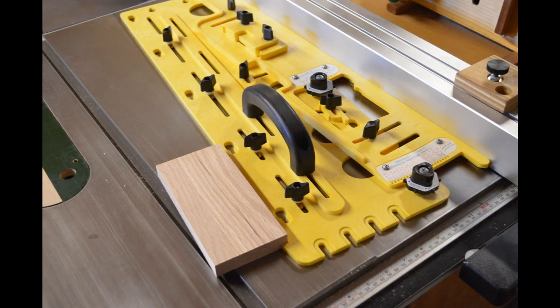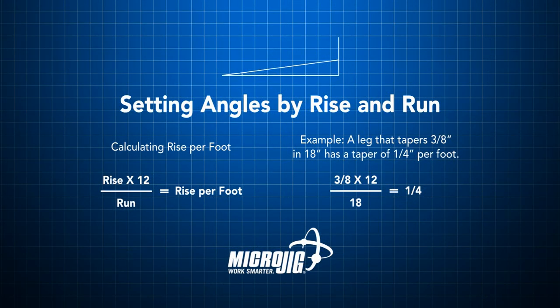Some simple math may be required to convert your rise and run numbers to the 12 inch scale that's on the micro dial. Just multiply your rise times 12 and divide by the run. That will give your rise per foot. For example, a 3 eighths rise over an 18 inch run, multiply 3 eighths times 12 for 4.5 and divide by 18, which gives you a quarter of an inch.